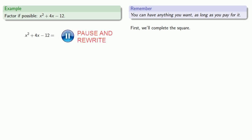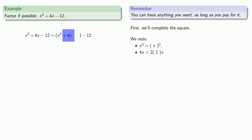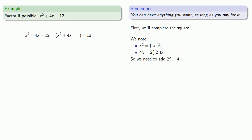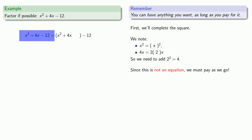We'll isolate the constant term and consider the variable terms. That first term is a square. Our second term is 2 times 2 times x, and so that means to complete the square, we need to add 2 squared, otherwise known as 4. Now it's important to understand this is not an equation, so if I add 4, I have to pay for it later by subtracting 4.